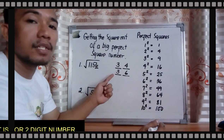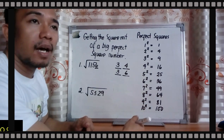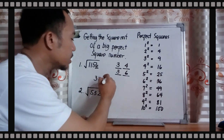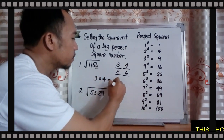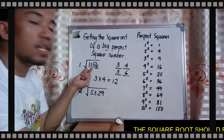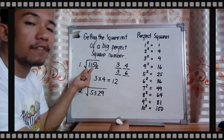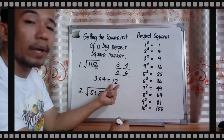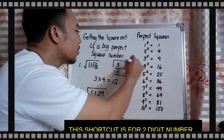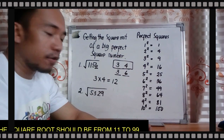Since your tens digit is 3, multiply 3 by its next number, which is 4. So 3 times 4 equals 12. Now compare 12 to your first two digits, which is 11. Since 11 is less than 12, the smaller option is the correct one. So the square root of 1,156 is 34.